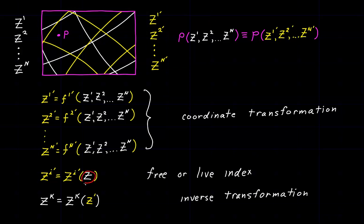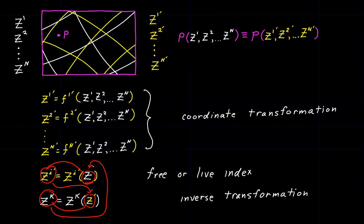Here, if I know the Z coordinates I can calculate the Z-prime coordinates, and if I know the Z-prime coordinates I can calculate the Z coordinates, which I could then substitute back again — and around and around it goes. These are the inverses of each other; I can transform from one system to the other and back again.